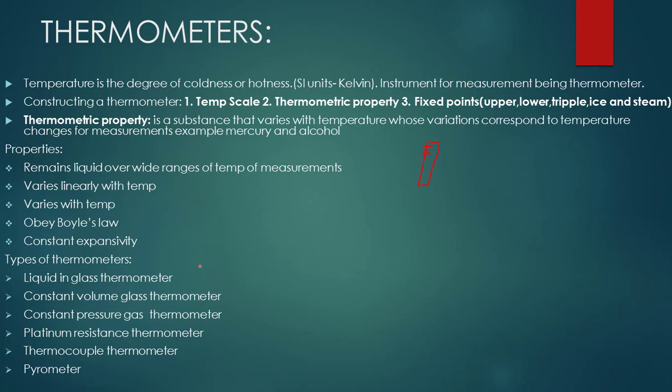Any substance that varies with temperature, where these variations correspond to temperature changes for measurement, is what we call thermometric property. These are the substances used in thermometers specifically.